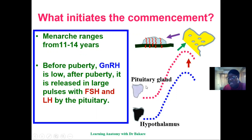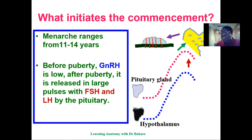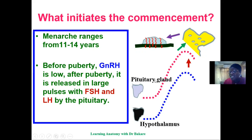The pituitary gland, located close to the hypothalamus, produces gonadotropins which include follicle-stimulating hormone and luteinizing hormone. The hypothalamus initiates the pituitary gland to secrete FSH and LH — these are endocrine-type secretions. Once secreted, they are taken via the bloodstream to initiate the ovary.